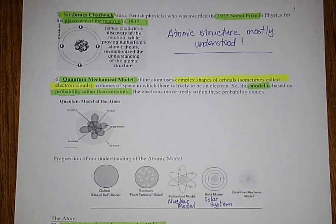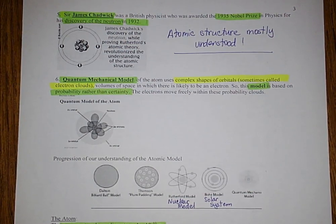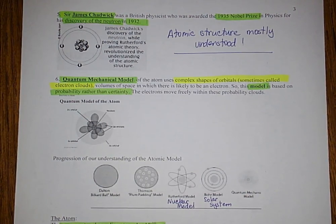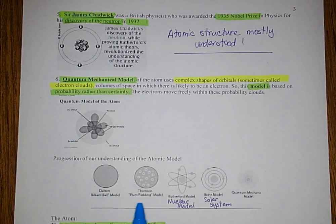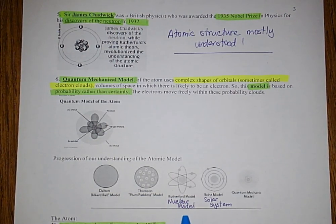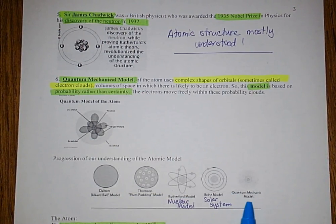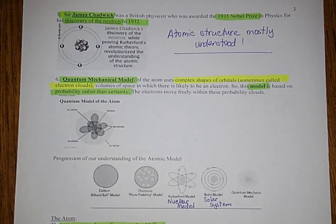This concludes our talk about the atomic model and the scientists involved in discovering the atomic structure. Keep in mind: Dalton came up with the billiard ball model, Thomson came up with the plum pudding model, Rutherford came up with the nuclear model, Bohr came up with the solar system model, and finally we have the quantum mechanical model — which is the model we use today.